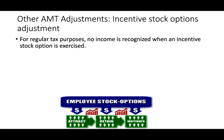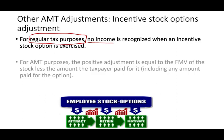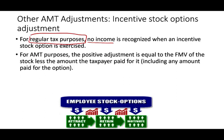So for regular tax purposes, when we exercise those options, we have no income. For AMT purposes, there is a positive adjustment, and that positive adjustment equals the fair market value of the stock less the amount the taxpayer paid, including any amount paid for the option. Let's take a look at how it works.